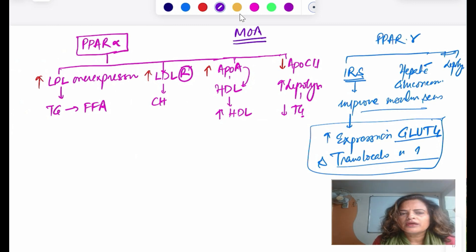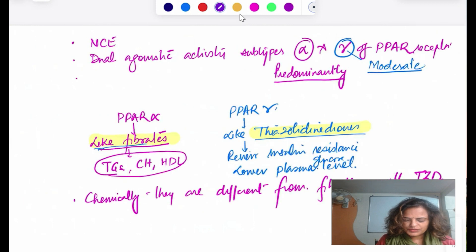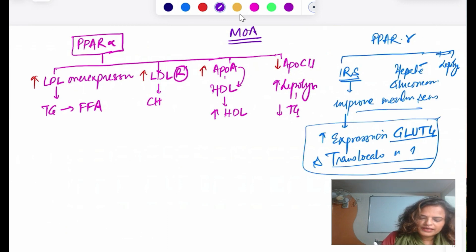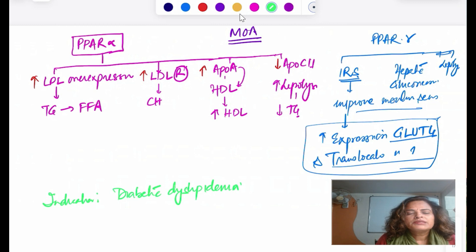This is the mechanism of action of saroglitazar. Where can we use this drug? It decreases triglyceride, cholesterol, marginally increases HDL, and lowers blood glucose level. Mostly it is indicated for diabetic dyslipidemia. Main indication is diabetic dyslipidemia, or it is used in patients with hypertriglyceridemia in type 2 diabetes who are not showing improvement with statins.